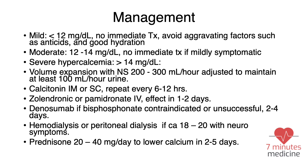For management, the first step is to stratify the severity of hypercalcemia: mild is less than 12, moderate is 12 to 14, and severe is greater than 14 milligrams per deciliter. If it's mild, there is no immediate treatment — avoid precipitating factors like antacids or vitamin D supplements, and advise good hydration.